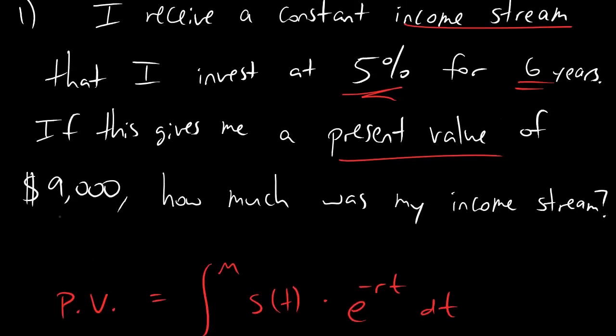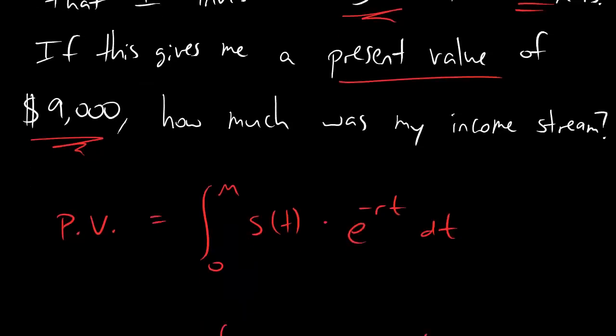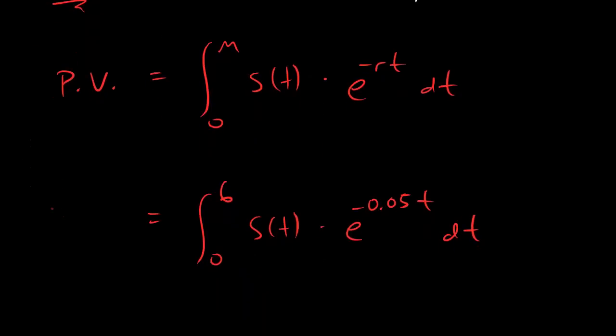Okay, and the last number they chuck at us is this $9,000, and the $9,000 is the present value. They say that my present value for all of this is $9,000, and so that goes in the place of present value. $9,000 equals stuff.